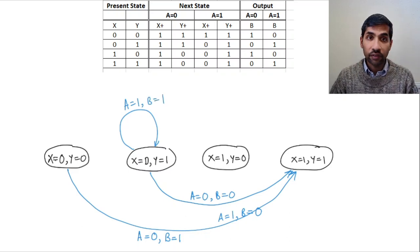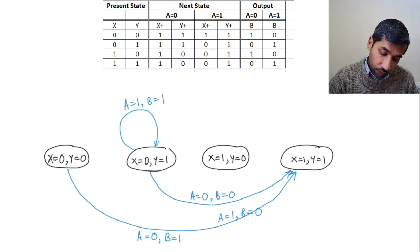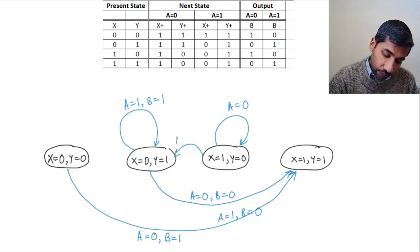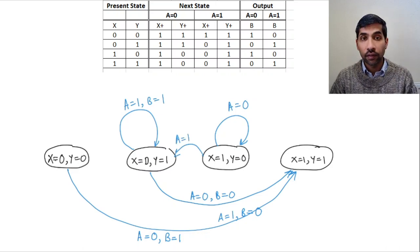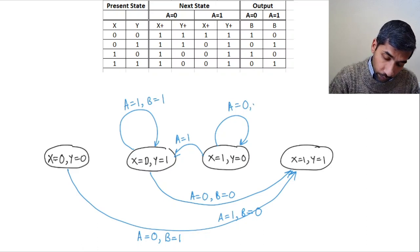Similarly, you can talk about the transition from state (1,0). If you are going from state (1,0), you have a transition when a equal to 0, and you have a transition to the other state when a equal to 1. And your outputs are b equal to 1 and b equal to 0 respectively.